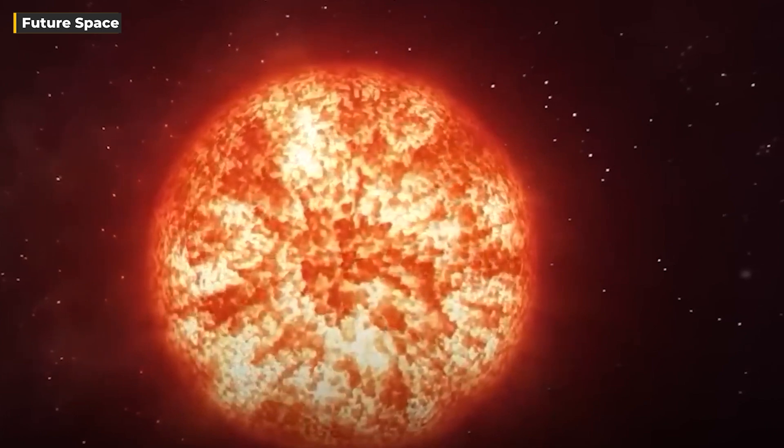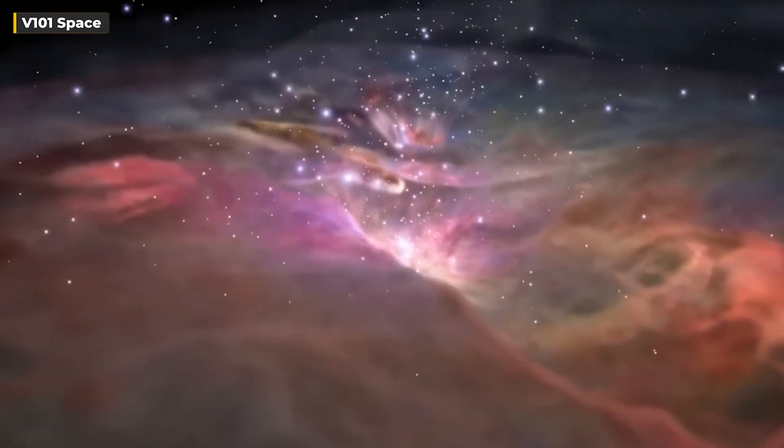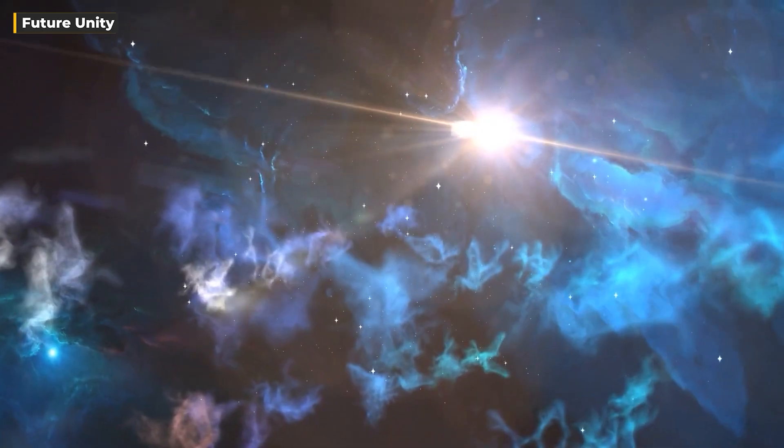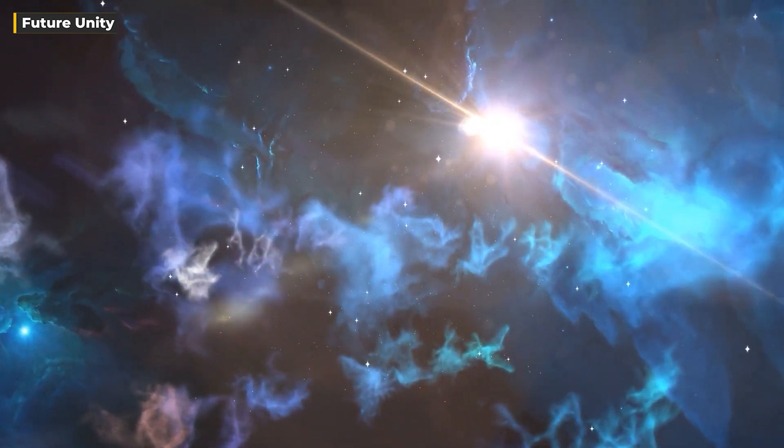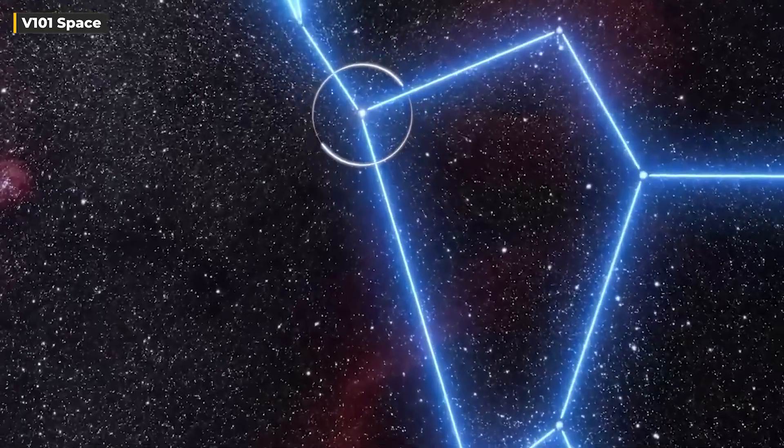However, there's a catch. Despite its enormous size, Betelgeuse is relatively youthful, clocking in at a mere 10 million years in age, while our sun boasts an age of around 5 billion years. This stark contrast arises from Betelgeuse's rapid consumption of its nuclear fuel, which essentially fast-tracks its stellar life cycle.